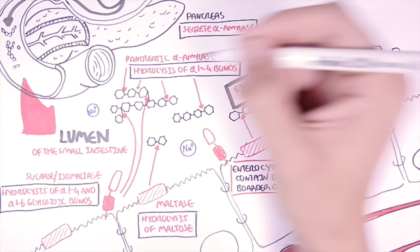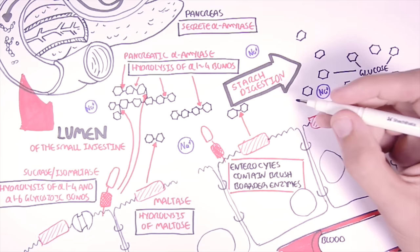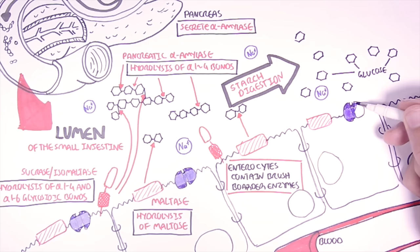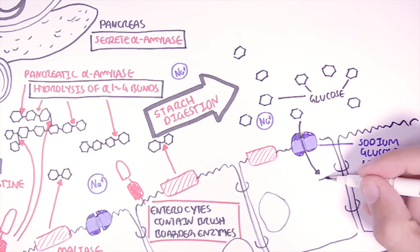Now within the lumen of the small intestine we also have many sodium ions that actually play a critical role in the absorption of glucose into the body. What happens is that on enterocytes we find these transporters called sodium glucose linked transporters or SGLTs. These sodium glucose linked transporters are found on the apical surface of the enterocytes. So on the top. And what they do is that they function as a co-transporter for both sodium and glucose. Two sodium ions will enter for one glucose molecule.